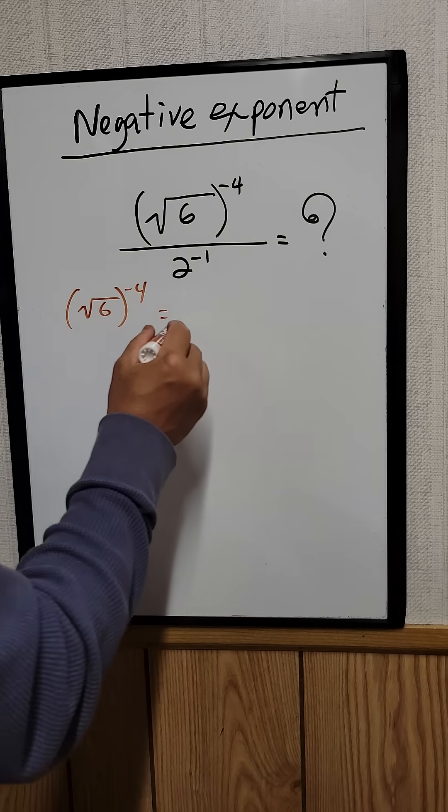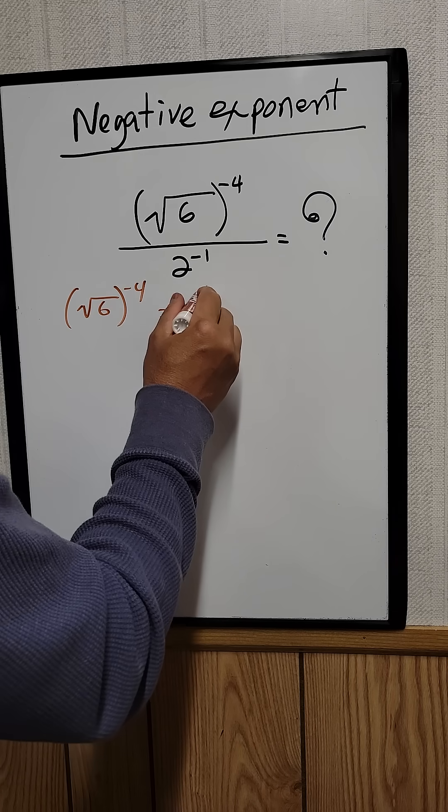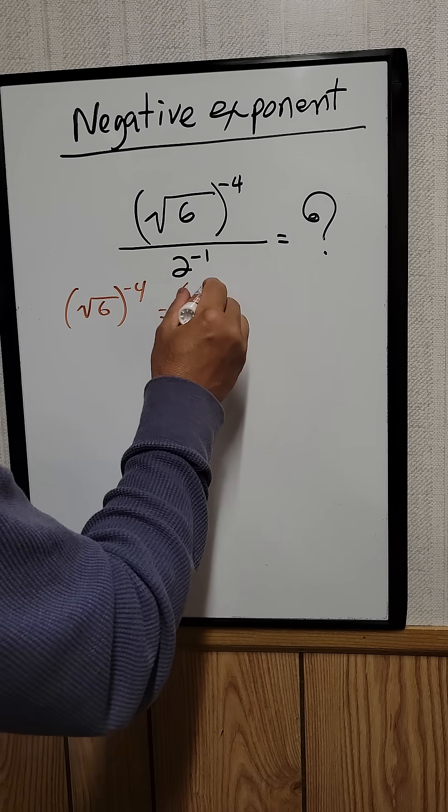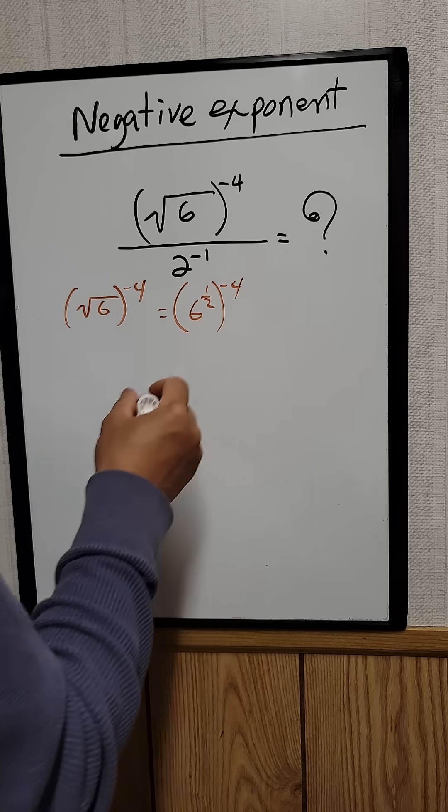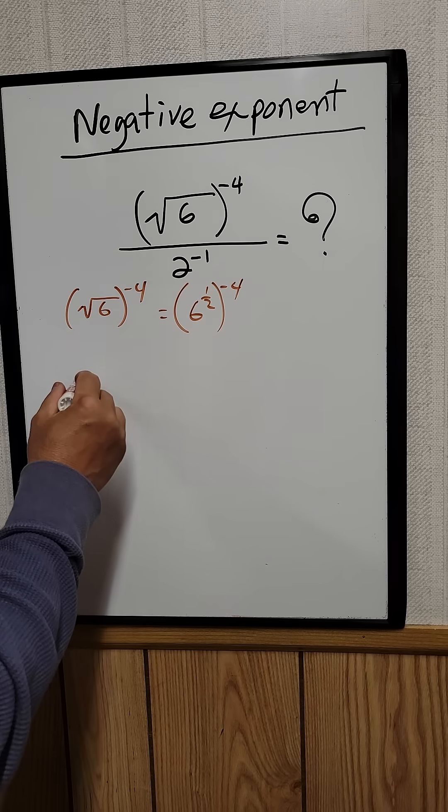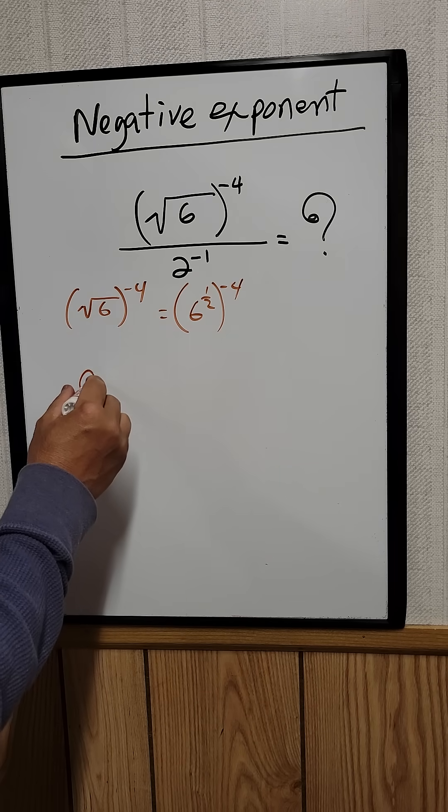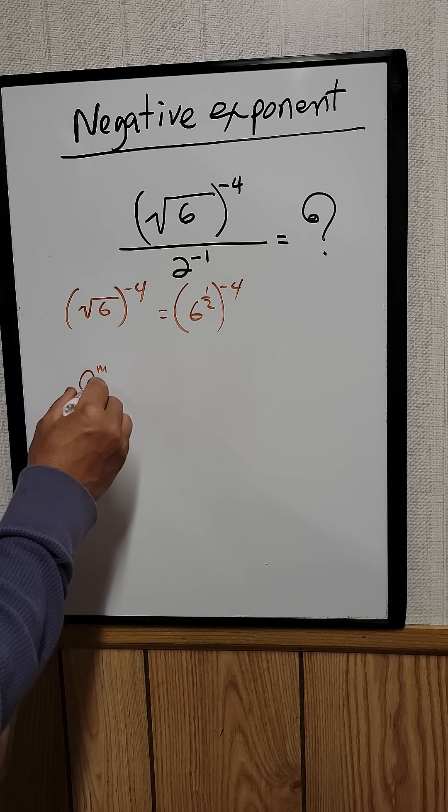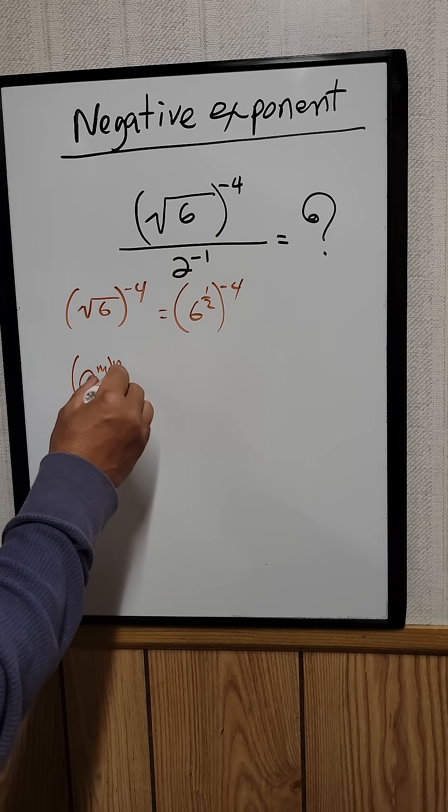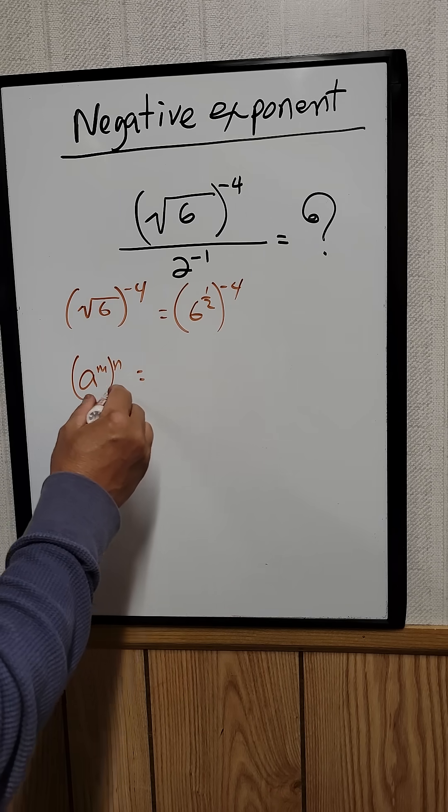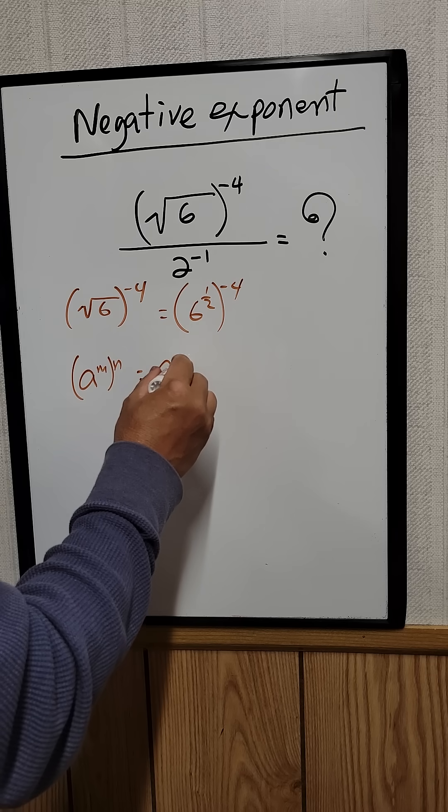The square root of 6, we can rewrite that as 6 raised to the 1/2, and then raised to the negative 4. There's a law of exponents that states that if you have a raised to the m and then raised to the n again, you can say that that's equal to a raised to the m times n.